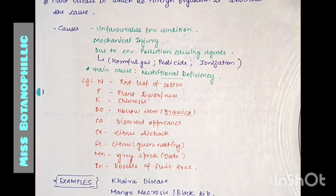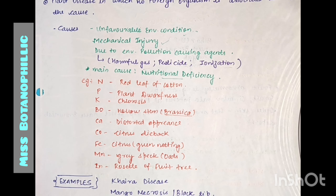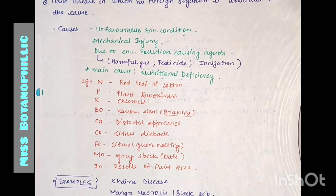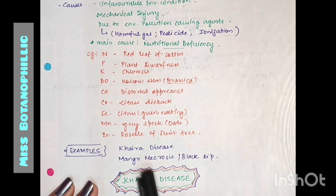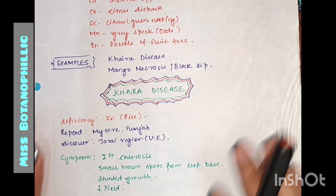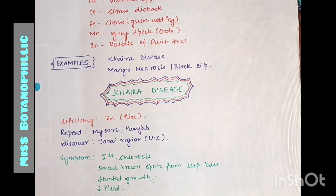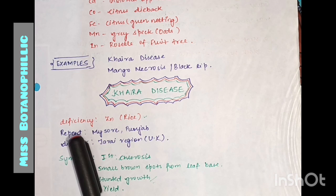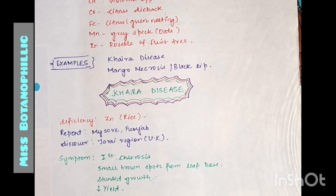We have many non-parasitic diseases, but I will tell you about two disease examples: one is Khera disease and one is mango necrosis, which is called black tip disease. The first disease we cover is Khera disease. It occurs because of zinc deficiency in rice, so it is a major case of nutritional deficiency — specifically zinc (Zn).